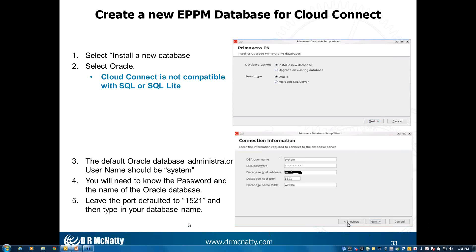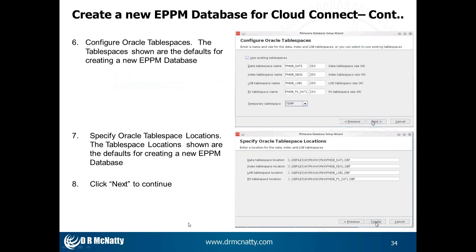At this point you can select your database name. Here's where it gets a little different — you have to set up Oracle table spaces. What is shown on this slide are the default Oracle table spaces, and generally these are going to work just fine for your setup. The table space locations show a C drive — this is not your local computer's C drive, this is a drive on a server or in the cloud. These are the default settings for table space locations. Click Next to proceed.